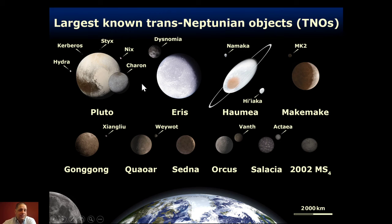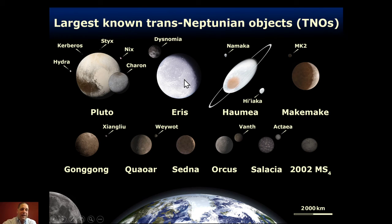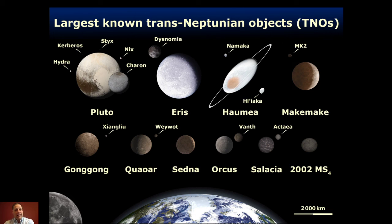People had been debating for a long time whether Pluto really is a planet because of its unusual orbital characteristics. When these workers found this new object, they were very aware of the implications and named it Eris — the goddess of chaos — because it throws the night sky into chaos. Now we don't even know what a planet is. We had to make decisions about whether to start adding many more planets or downgrade an existing one. It's a big deal in the astronomical field.